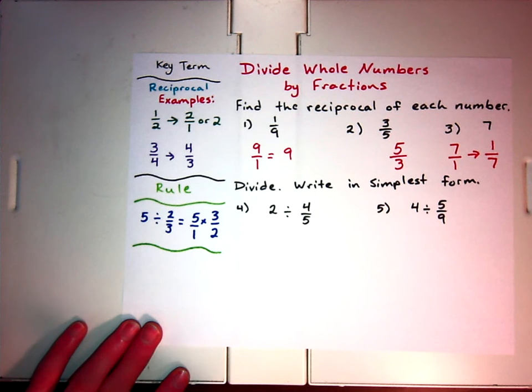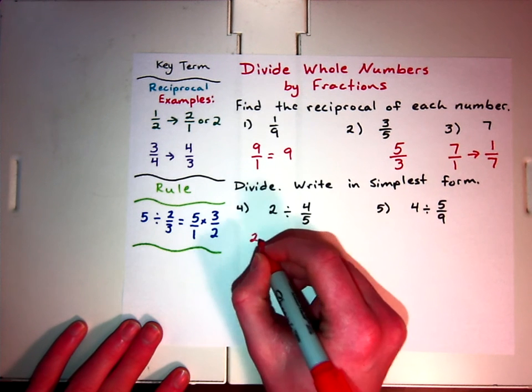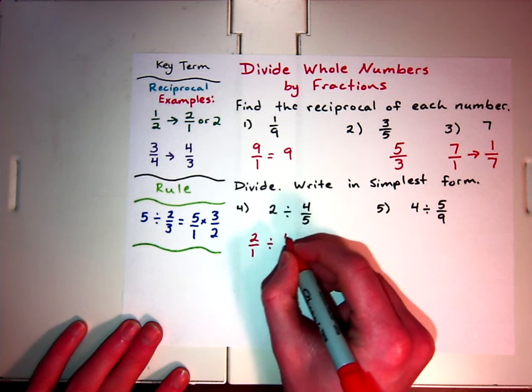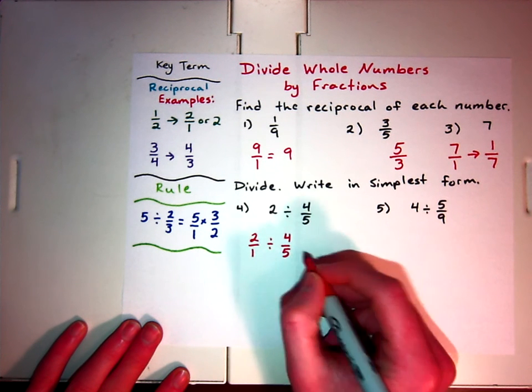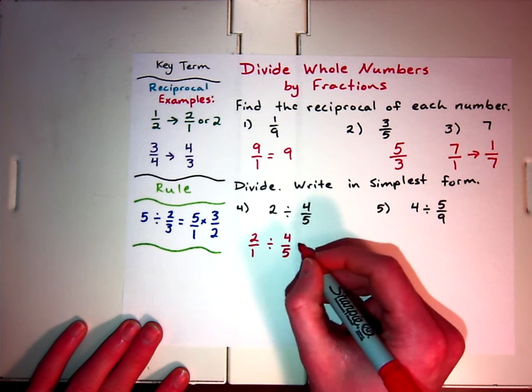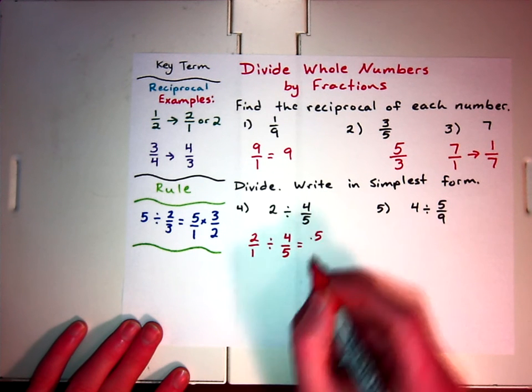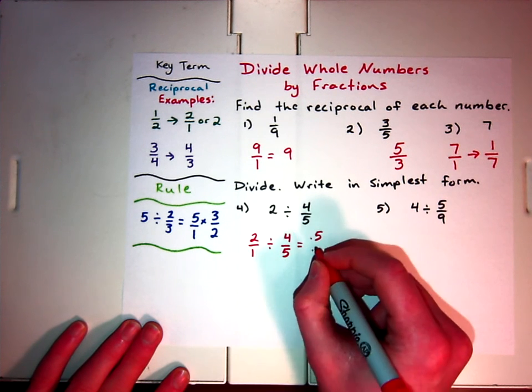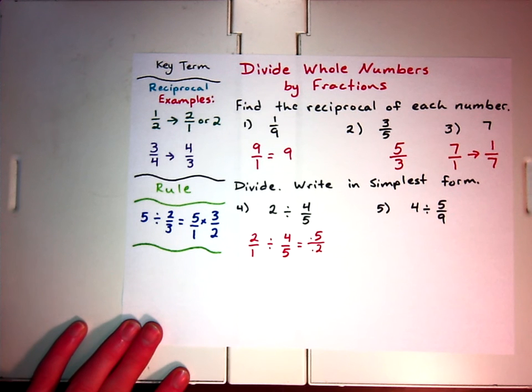Then we're going to have some where we need to do these division problems. It says divide, write in simplest form. But like we talked about, division with fractions is not very fun, it doesn't work that well. We could look and we could actually do this: 2, and I'm going to write 2 over 1, divided by 4 over 5. Well, 2 divided by 4 is 0.5, and 1 divided by 5 is 0.2. Well, guess what? I don't want to deal with decimals in my fractions. So that's one reason that we use this rule.